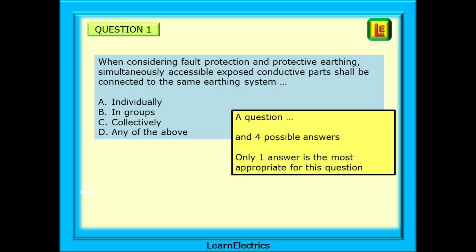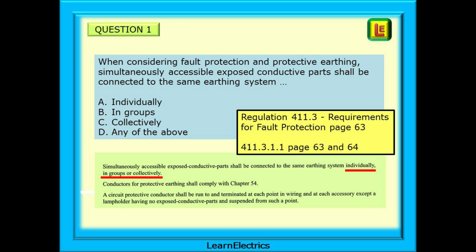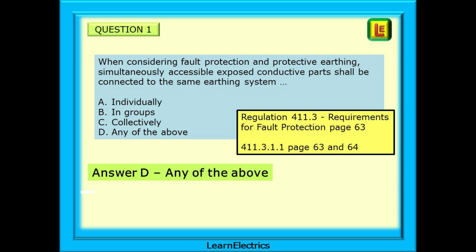The question asks: when considering fault protection and protective earthing, simultaneously accessible exposed conductive parts shall be connected to the same earthing system — and then four possible answers complete the sentence. Only one answer is most appropriate. Regulation 411.3 on page 63 is about fault protection. Regulation 411.3.1.1, as shown below and underlined, gives us the answer. We should choose answer D — the regulations say that we can use any of the listed connection types.